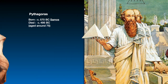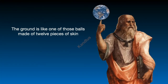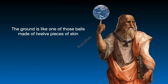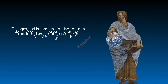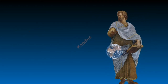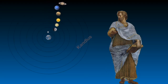Then in the early 4th century BC, Plato wrote about the spherical Earth. He said the Earth looked like one of those balls made of 12 pieces of skin. Then it was around 330 BC that his former student Aristotle provided evidence for the spherical shape of the Earth. He said the Earth is spherical and at the center of the universe, and the moon, sun and other planets revolve around the Earth.